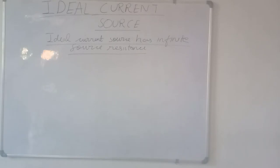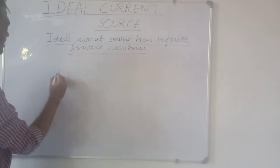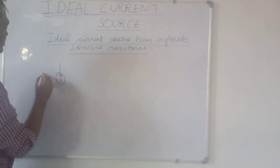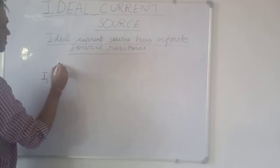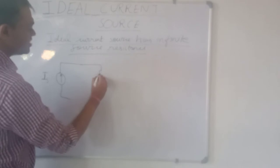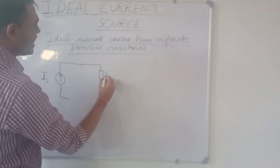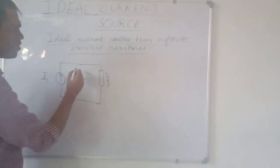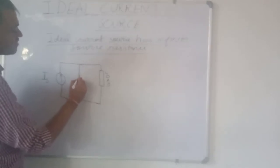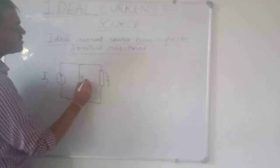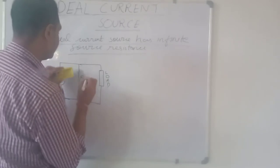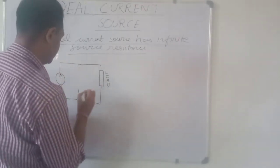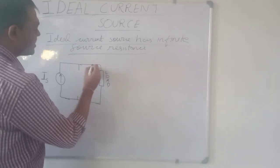The ideal current source is drawn like this, with current Is and a load connected to it. The ideal current source has infinite source resistance, and this infinite source resistance can be replaced by an open circuit. So RS is infinite, and replacing it with an open circuit represents the ideal condition.